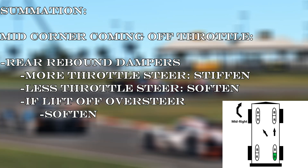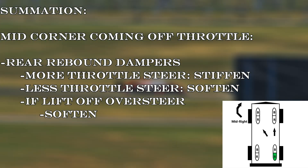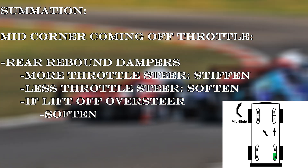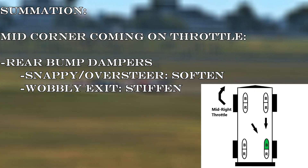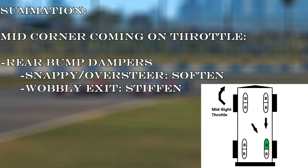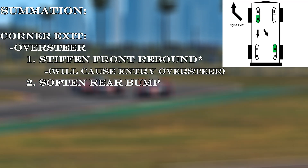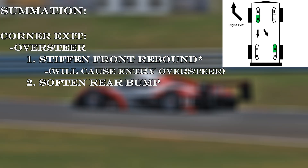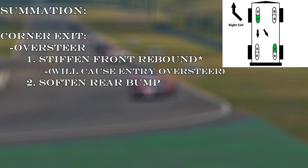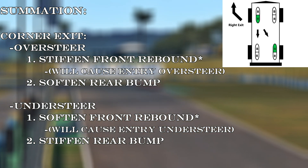For mid-corner coming off throttle: adjust rear rebound dampers — if you'd like more throttle steer, stiffen them; if there's too much throttle steer or lift-off oversteer, soften them. Mid-corner when applying throttle: adjust the rear bump dampers — soften them if the car feels snappy, but otherwise keep them as stiff as possible. You don't want the car wobbling all over the place. For corner exit oversteer: first try stiffening the front rebound dampers — note this will cause entry oversteer — then soften the rear bump dampers. For corner exit understeer: soften the front rebound dampers (beware this will cause entry understeer), and you could also try stiffening the rear bump dampers.